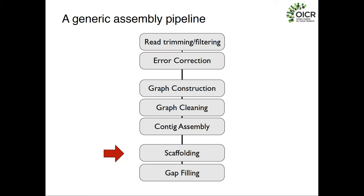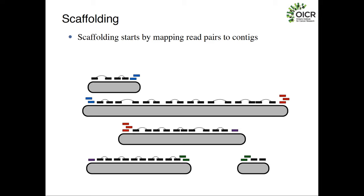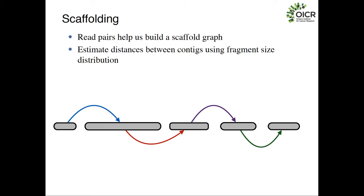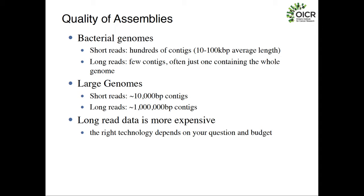The last step is scaffolding. If we have read pairs we can try to build higher order structures where we know the order of each contig in the scaffold but not the exact sequence between them. We align our read pairs to our contigs and look for pairs where one half is on one contig and the other half is on another contig. If we see multiple read pairs supporting a relationship, we can infer that this contig is probably followed by that contig in the genome. We put them together into a scaffold and use the known fragment size distribution to estimate how far apart they are.